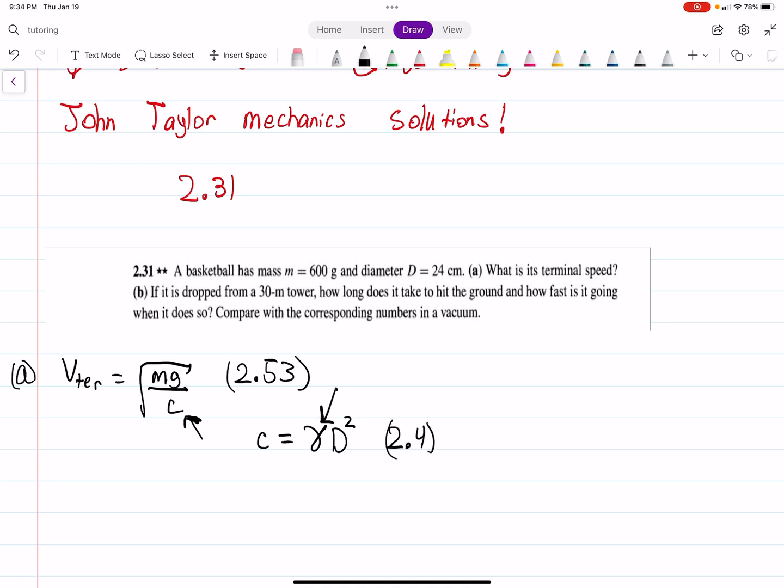Gamma is just a constant. Well, it depends on where you're at, but we take it as a constant, 0.25 newtons times seconds squared over meters to the fourth. This was equation 2.6, I believe, out of the textbook. And d, okay, that's the diameter. That's given to us. All right, so that's pretty easy.